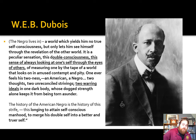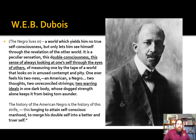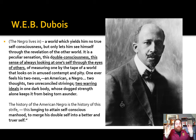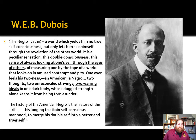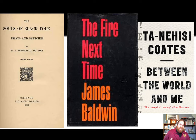W.E.B. Du Bois also wrote extensively about being black in America, saying that you always, as a black man in this time, had to think about who you are but also how others are seeing you. You are an American, you are who you think you are, but you are also seen by society as just a Negro. His idea was that societal expectations and stereotypes created a lot of internal conflict within persons in American society. Writers like James Baldwin and Ta-Nehisi Coates have since picked up on these themes.